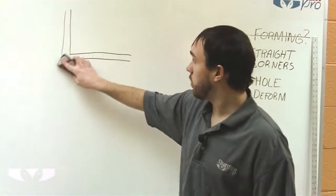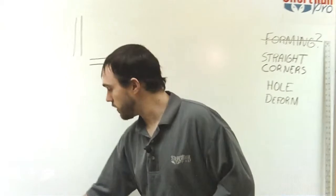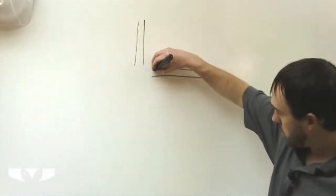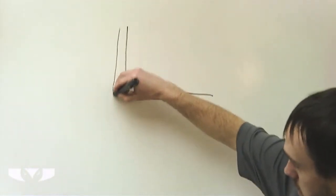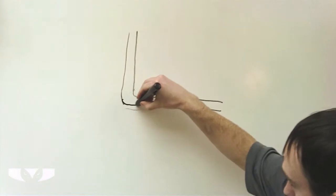So, what you would want to do for this instead of that straight corner, is you want to consider that there's going to be a little bit of a radius right here. Now, it's not going to bulge out quite that much, but you get the idea.